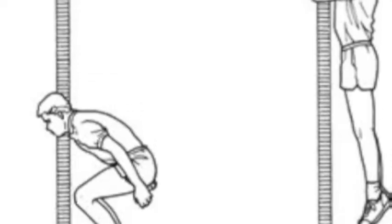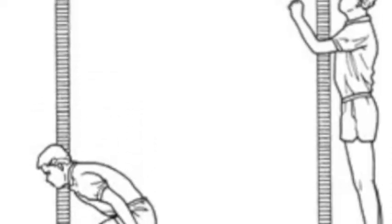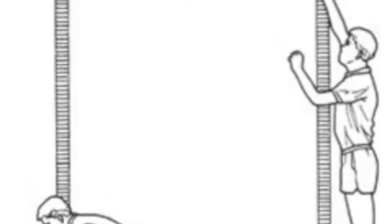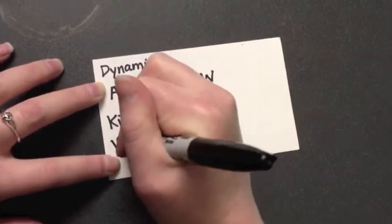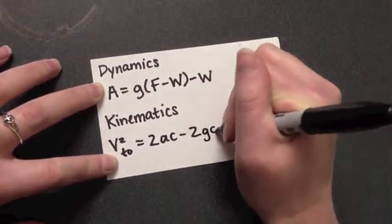We can first use a vertical jump as a simple model. Given a certain distance of crouching, how high can we jump? Dynamics describe the acceleration, whereas kinematics tell us the takeoff speed.